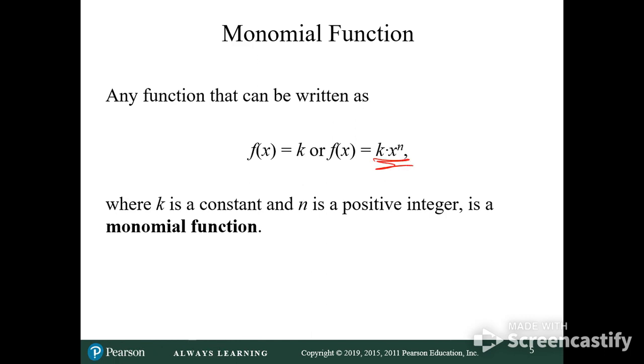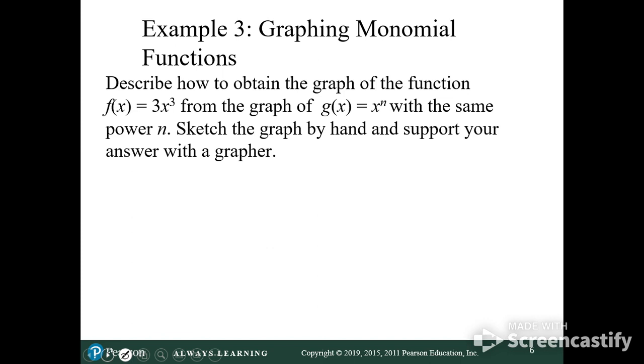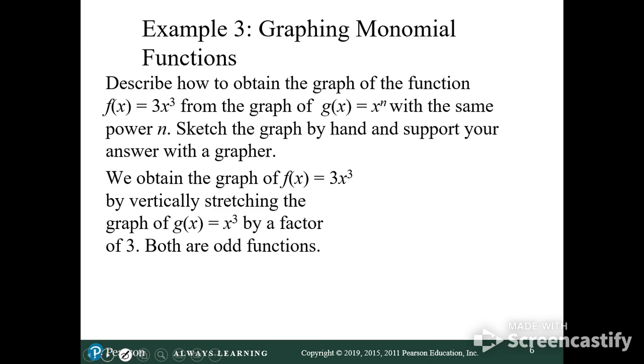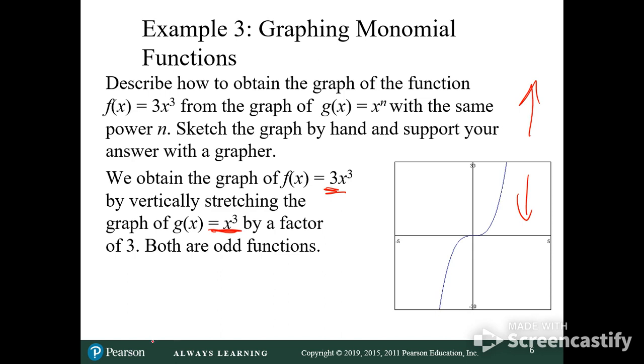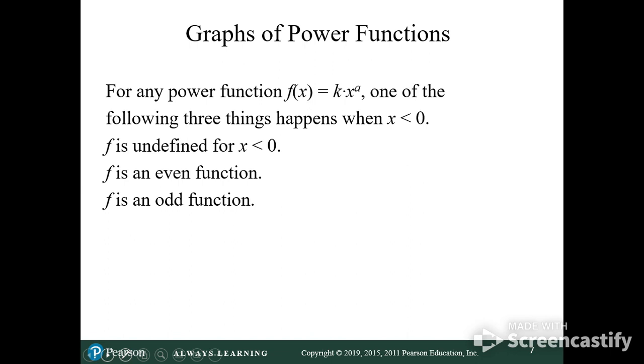When there's just one term, it's called a monomial function. Okay, graphing a monomial function is just like graphing a power curve. So if we know what x cubed looks like, if we have 3x cubed, then it's just stretched upward and downward three times. It's three times higher, three times lower than the normal x cubed curve.